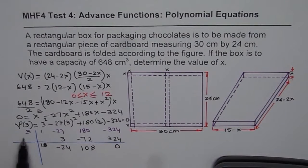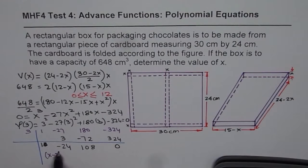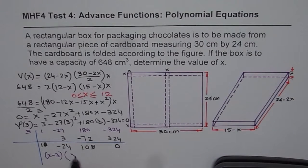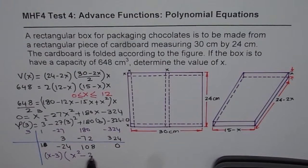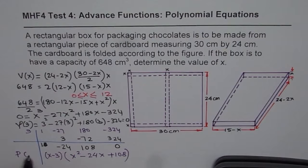So that gives you that x minus 3 is a factor. And now you can write this as x minus 3 times, so that is a square parabola. So we have x squared minus 24x plus 108. So that becomes your polynomial. Let me write this as polynomial is equal to this. Now we need to factor this polynomial.